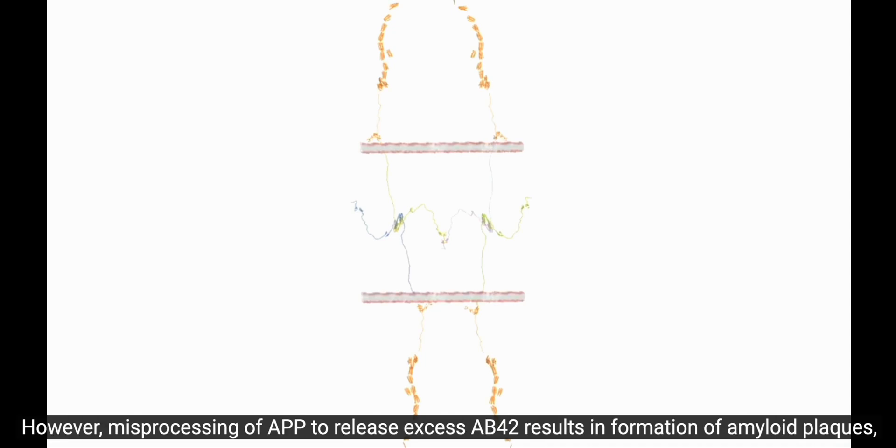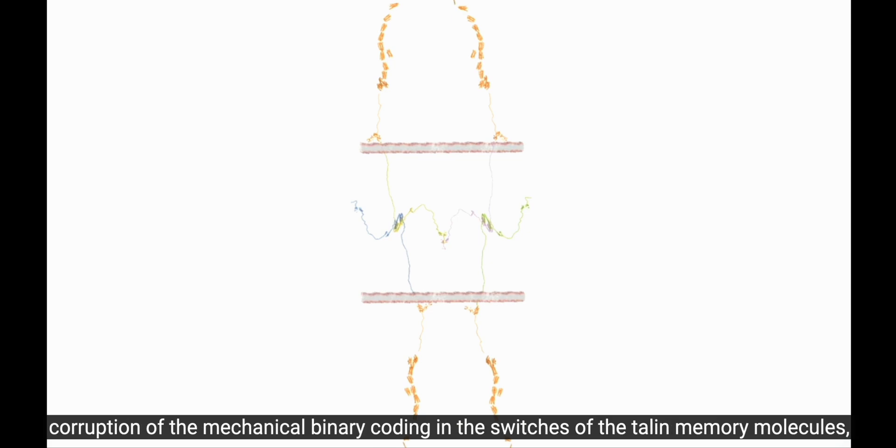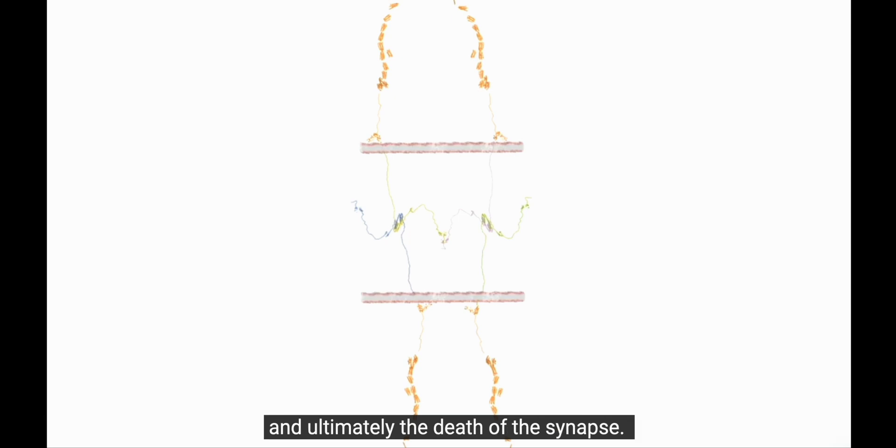However, misprocessing of APP to release excess AB42 results in formation of amyloid plaques, corruption of the mechanical binary coding in the switches of the talin memory molecules, and ultimately the death of the synapse.